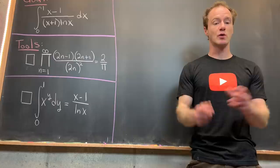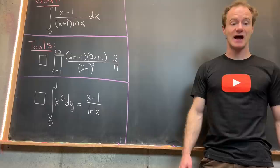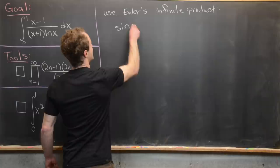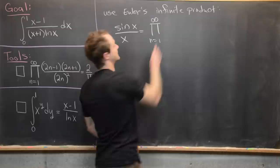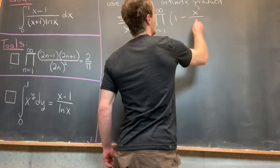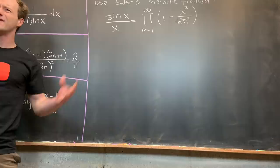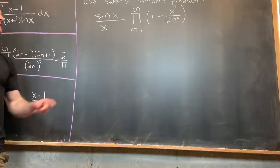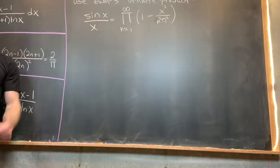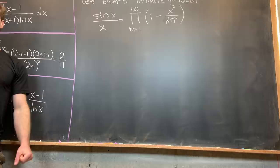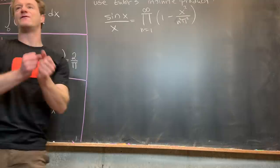Let's prove the first tool using Euler's infinite product version of the sine function. That says sine of x over x equals the product as n goes from 1 to infinity of 1 minus x squared over n squared times pi squared. The idea is that sine has zeros at every integer multiple of pi, including 0. Dividing by x cancels the root at x equals 0, and the product captures all the other roots.